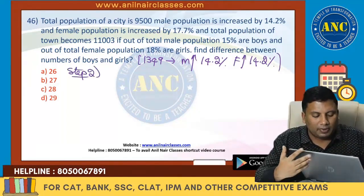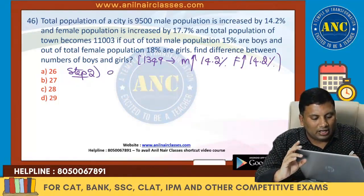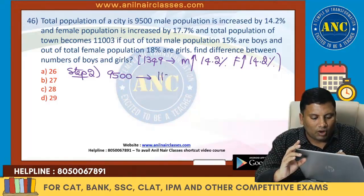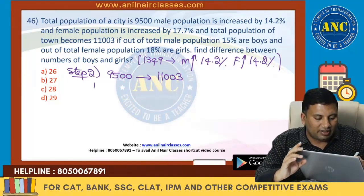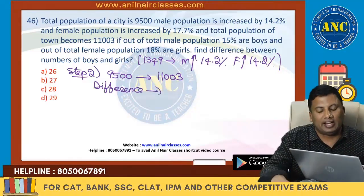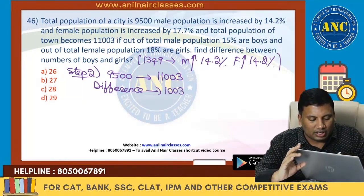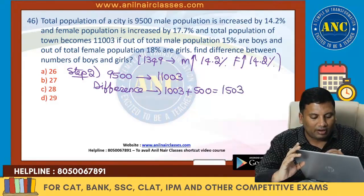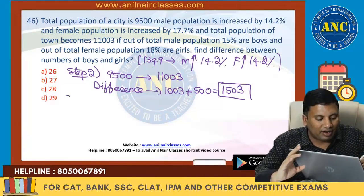Step 2: Actually, the population is 9,500 and it became 11,003. So the actual increase is 11,003 − 9,500 = 1,503. But our Step 1 calculation gave 1,349. The difference between 1,503 and 1,349 is 154.